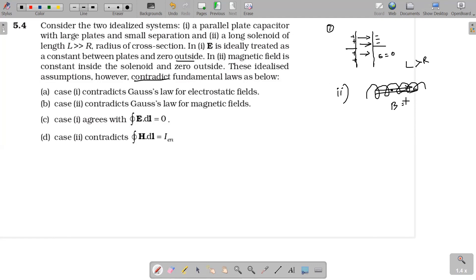And outside the magnetic field is zero. These idealized assumptions however contradict fundamental laws. Does it contradict Gauss's law of electrostatic field? Gauss's law of electrostatic field is closed integration of E dot dS equals Q by epsilon naught. It's not contradicted because electric field is obeying it.